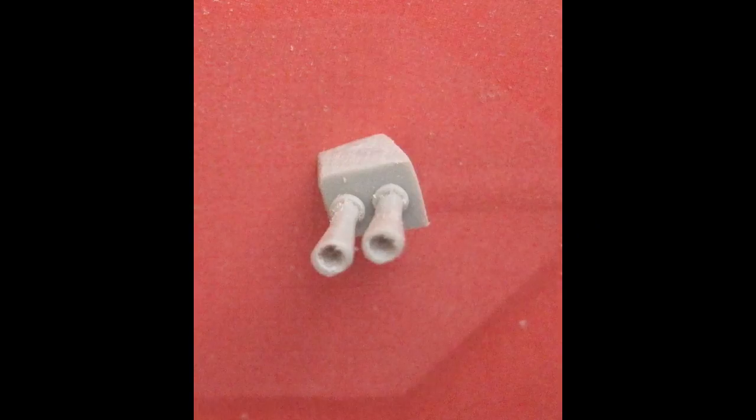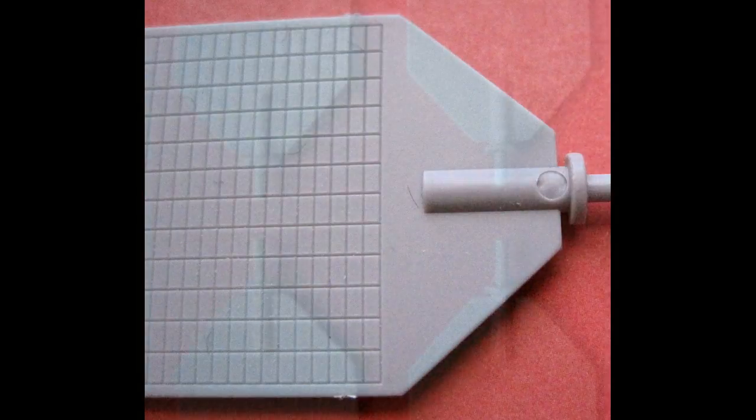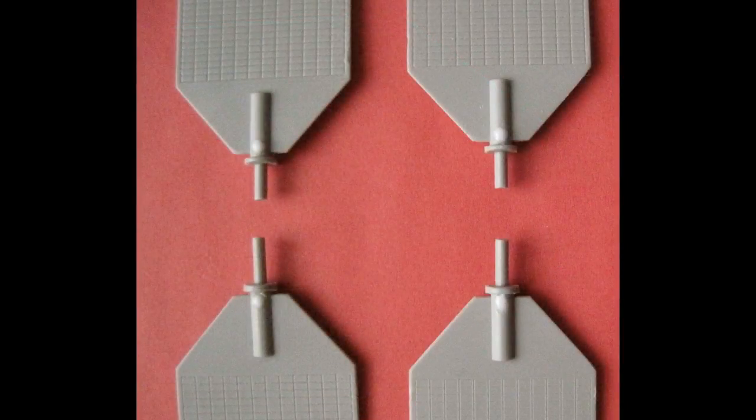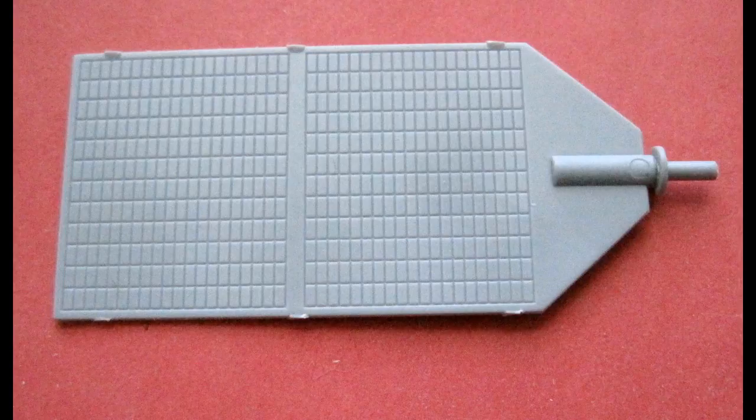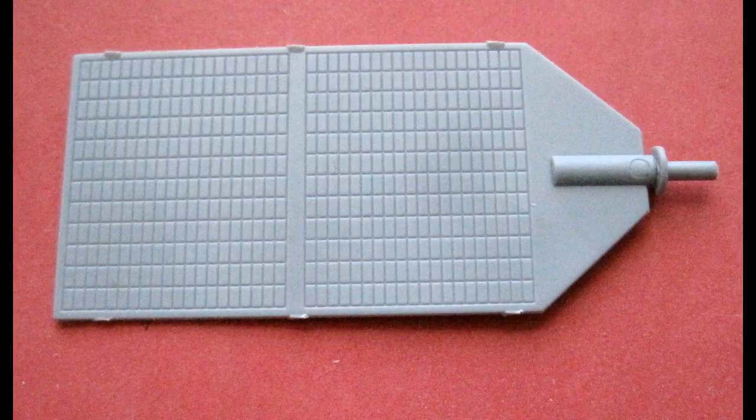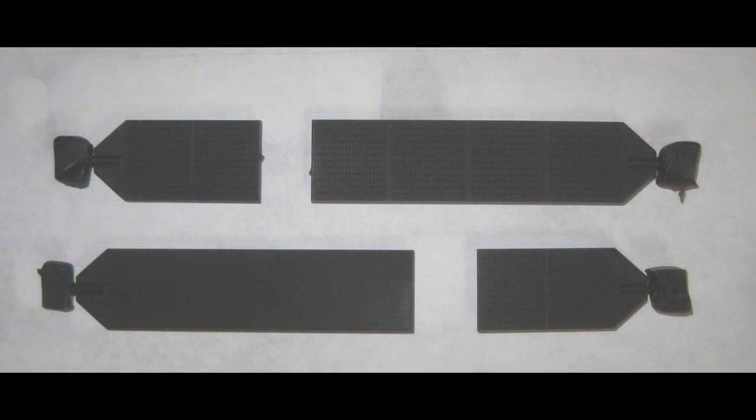You'll find that on the solar panels, there's some ejector pin marks on the rotational shaft there, to the right of this photo, and those should be filled and smoothed off too. You'll also find on the edges of the shorter panels, that they have some sprue attachment marks, and the larger ones actually, that will need to be filed off and sanded smooth as well. I used some masking tape to tape off the attachment points there where the shafts go into the spacecraft. And then I painted the solar panels a flat black.